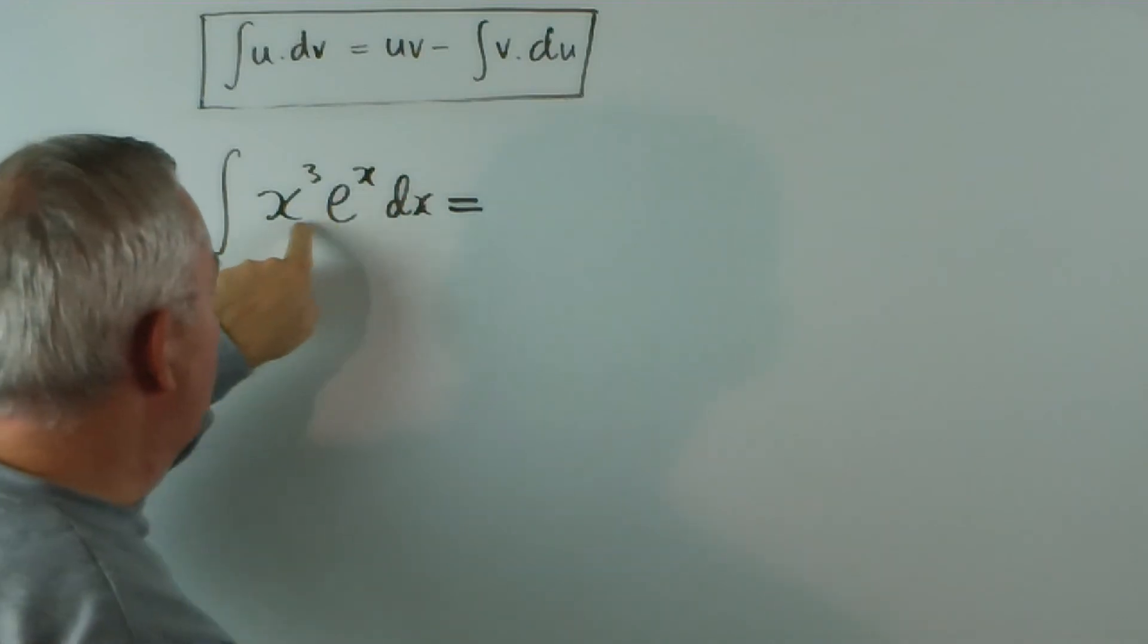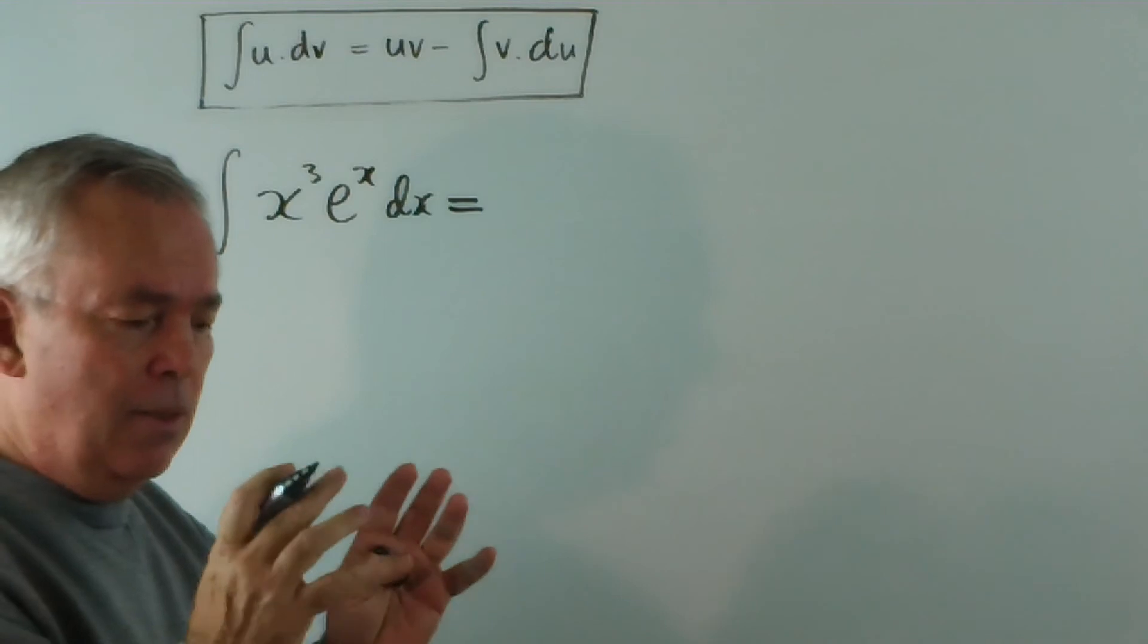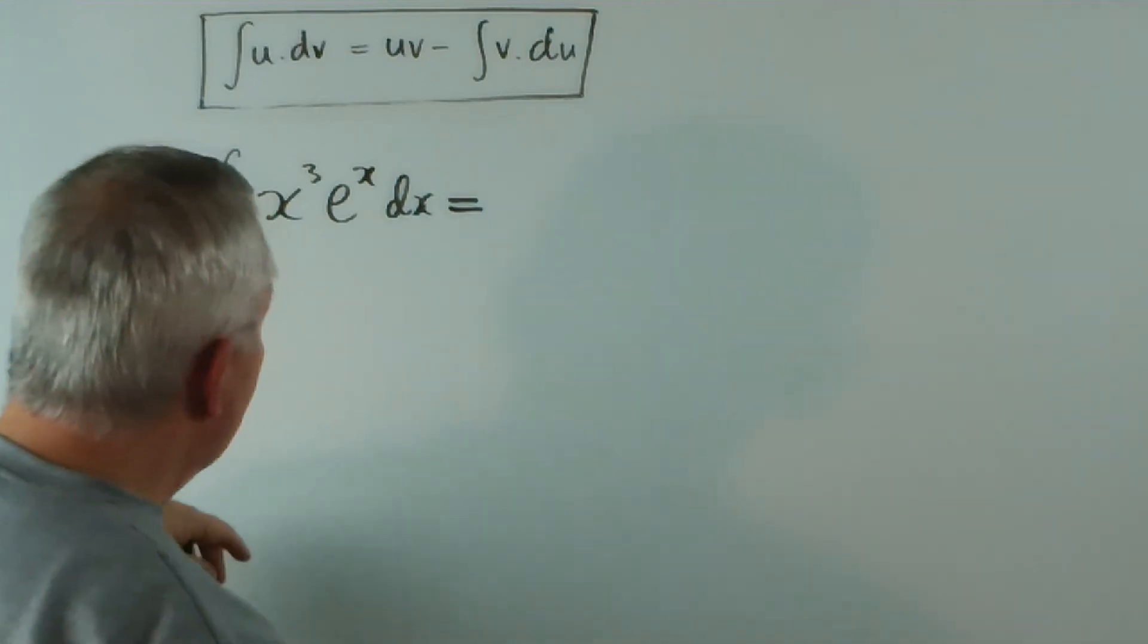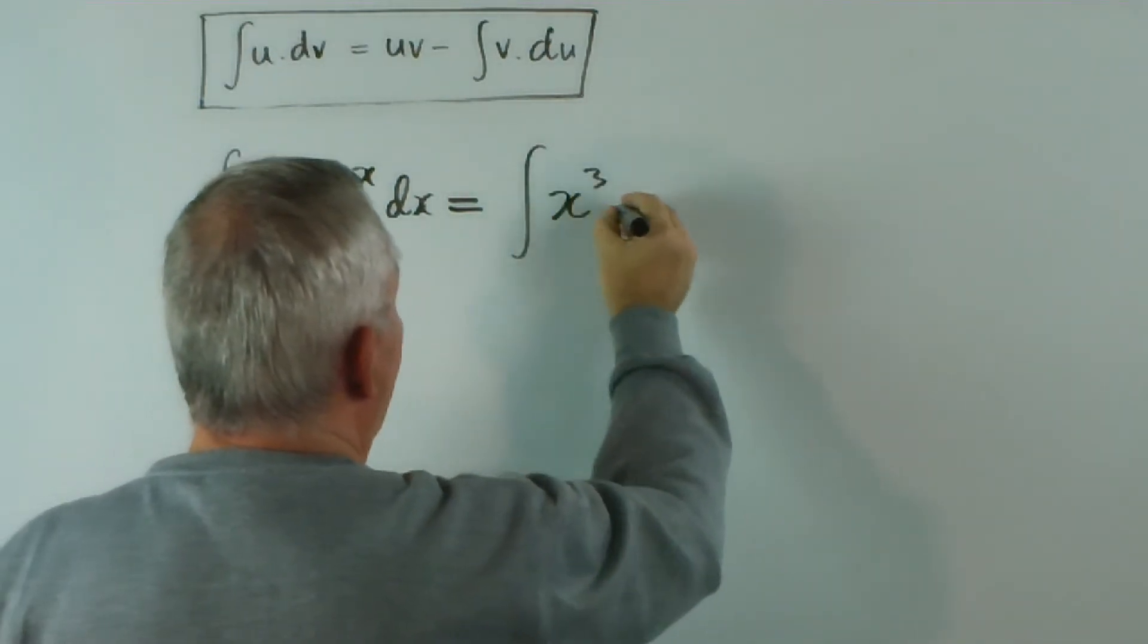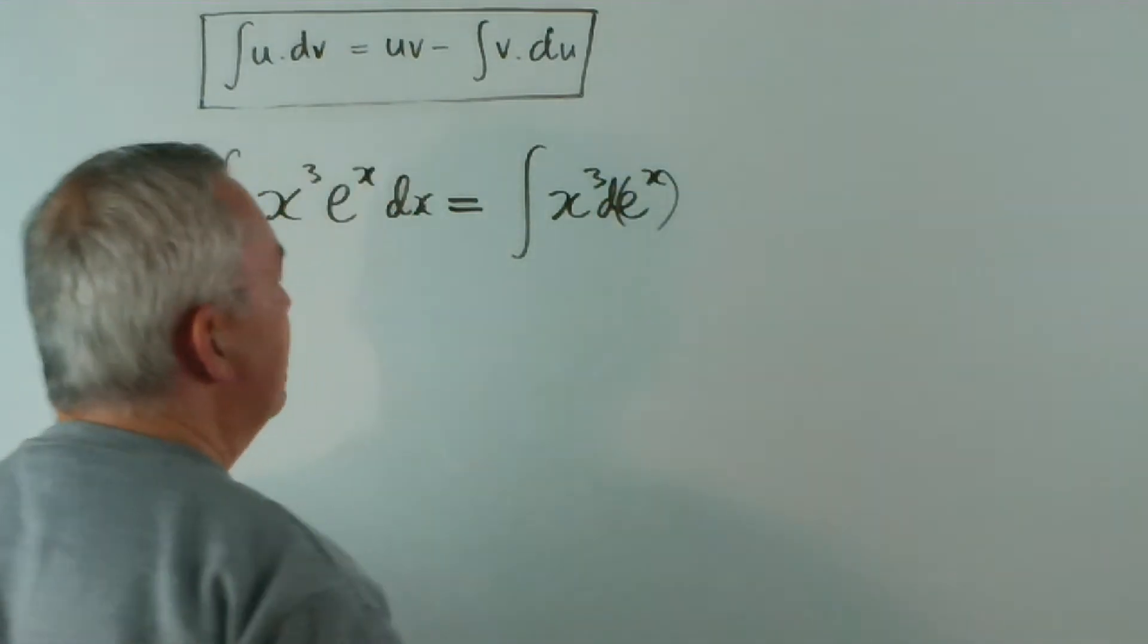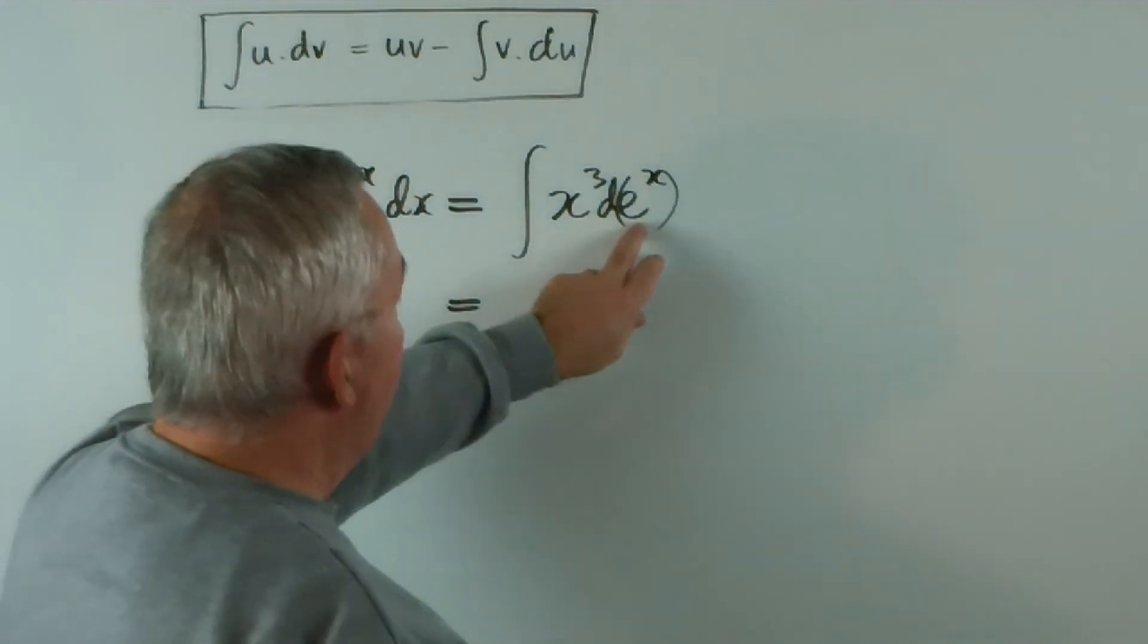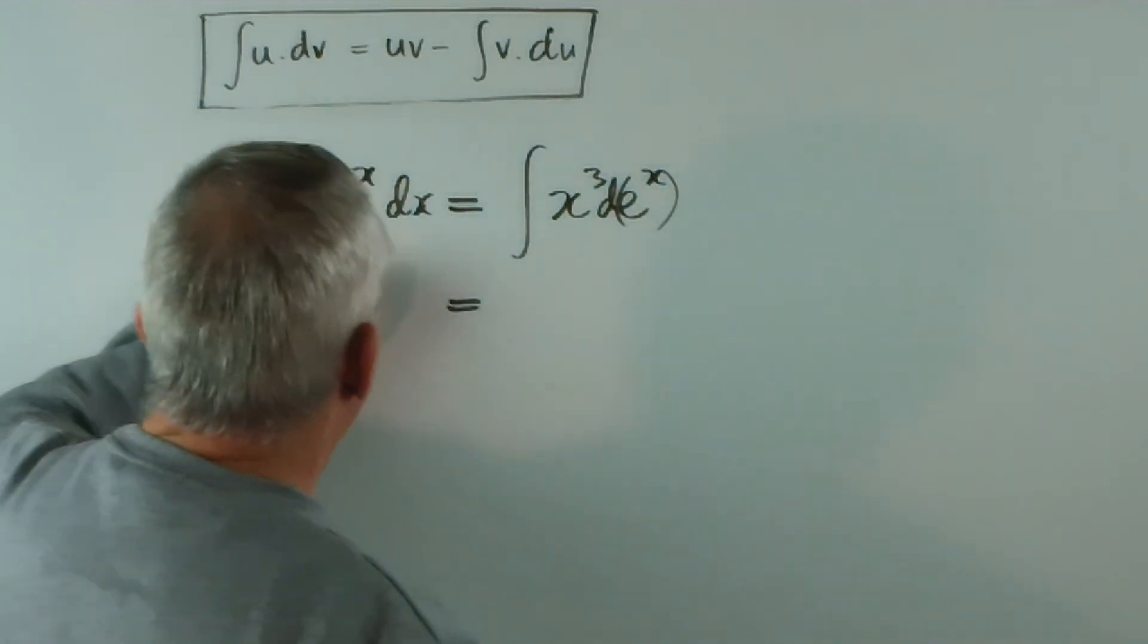Because the derivative of this function inside is not x^3, it's actually 1 - the derivative of x is 1 - this doesn't conform to the pattern of a chain rule. So, we use integration by parts. I'm going to move the e^x inside the derivative. Oh, sorry - d(e^x). And now, because the derivative of e^x is e^x - so, that's nice and simple.